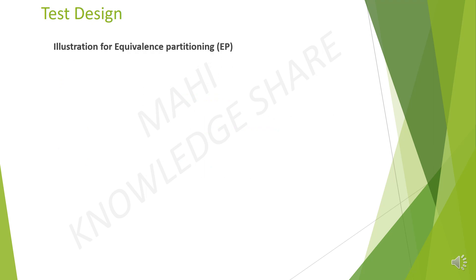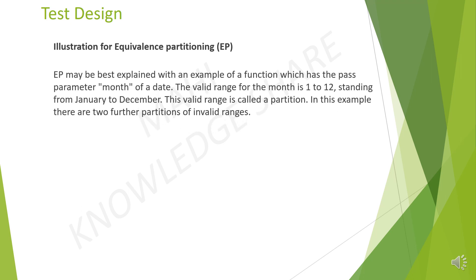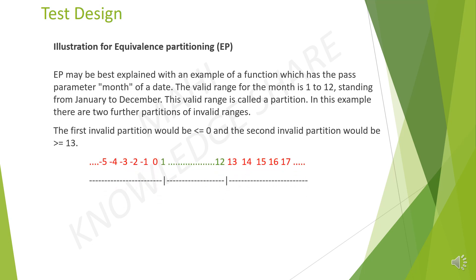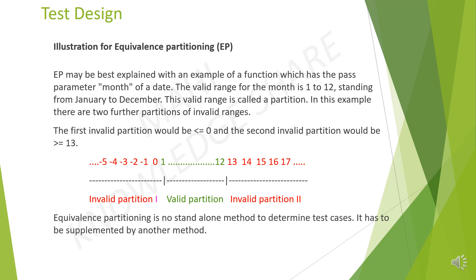We will see an illustration for equivalence partitioning. It may be best explained with an example of a function which has the pass parameter month of a date. The valid range for the month is 1 to 12, standing from January to December — this valid range is called a partition. In this example, there are two further partitions of invalid ranges: the first invalid partition would be less than or equal to 0, and the second invalid partition would be greater than or equal to 13. Equivalence partitioning is not a standalone method to determine test cases — it has to be supplemented by another method.